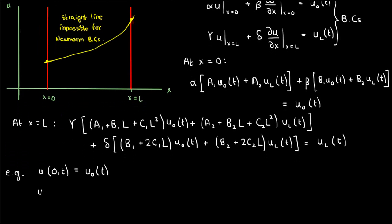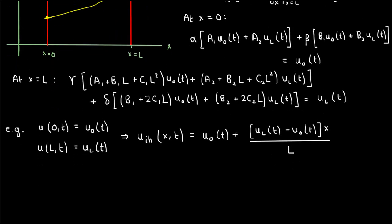For instance, if I had pure Dirichlet boundaries, then my inhomogeneous solution component would look something like this. So very similar to what we had last time, except now the U0 and UL are time-dependent instead of time-independent.